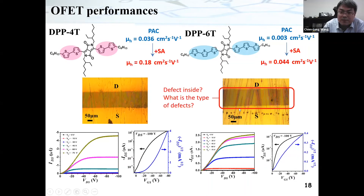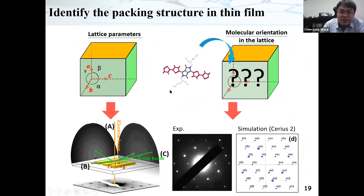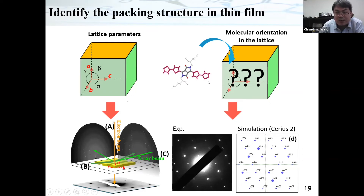This was an indication that some defects could exist in the crystal array. To identify what kind of defects are along the charge transport channel, we needed to first solve the packing structure of the conjugate molecules in the crystal array. We could not use single-crystal structure information, since molecules typically pack differently in thin films. So we had to solve the packing structure by our own methodology: first use electron diffraction and two GIXRD patterns to reveal the lattice parameters, then place the molecule into the lattice and rotate it in simulation until the simulated electron diffraction pattern matches the experimental one.